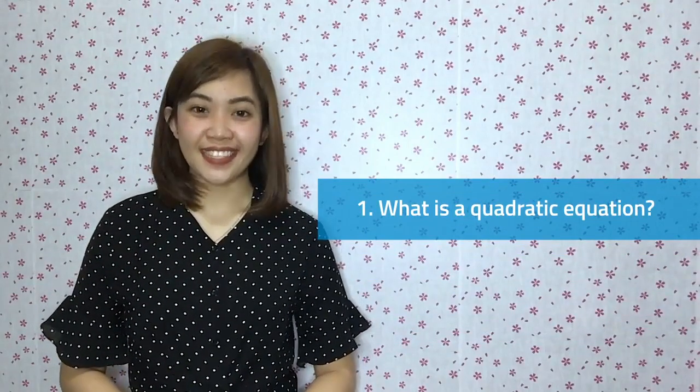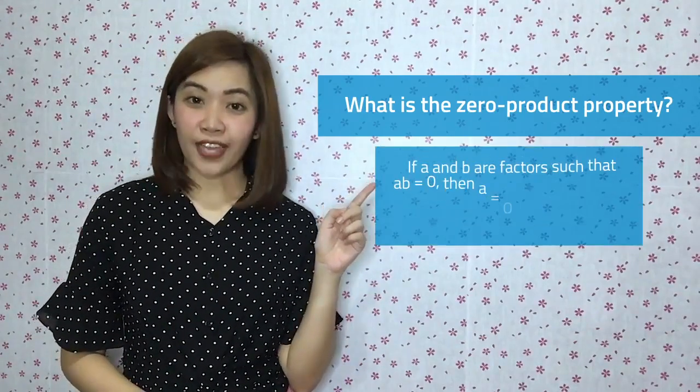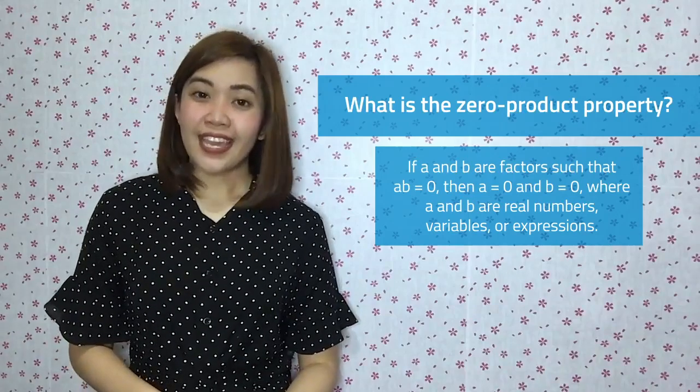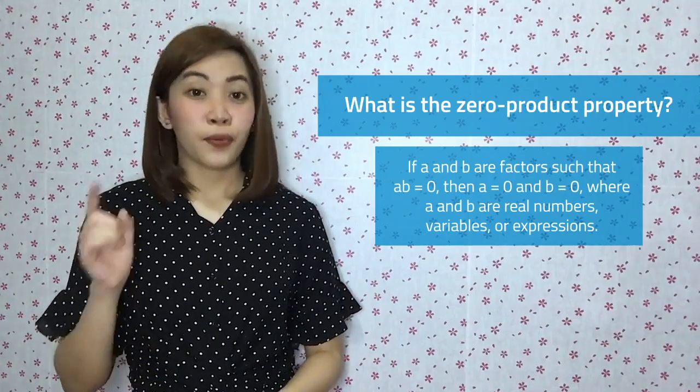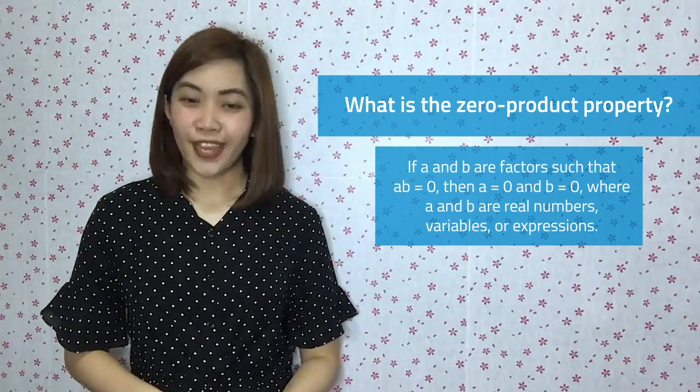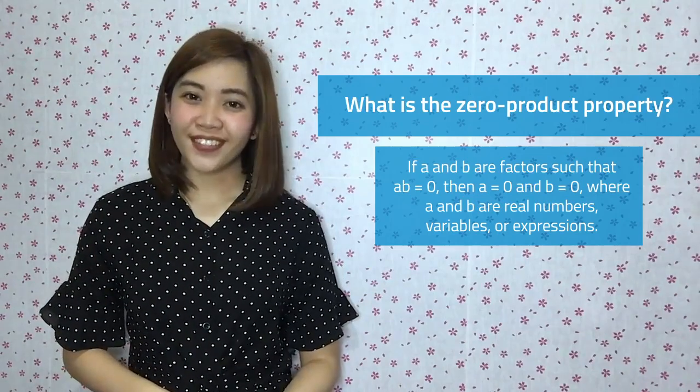That was great, students! Let's go back to our three questions. A quadratic equation in one variable is an equation written in standard form ax squared plus bx plus c equals 0, where a, b, and c are real numbers and a is not equal to 0. It is a second-degree equation. The zero product property tells us if a and b are factors such that ab equals 0, then a equals 0 and b equals 0, where a and b are real numbers, variables, or expressions. This property applies to three or more factors as well.